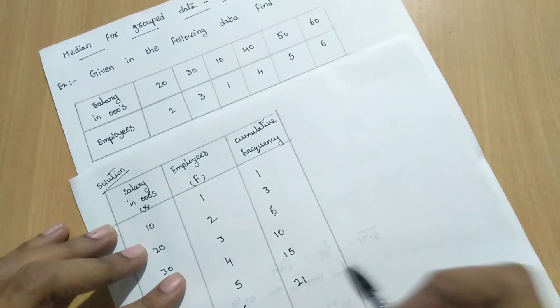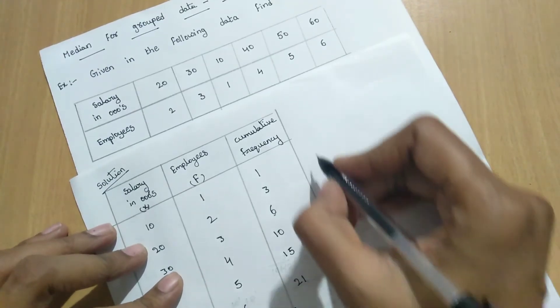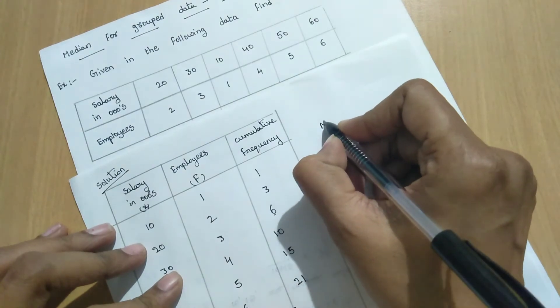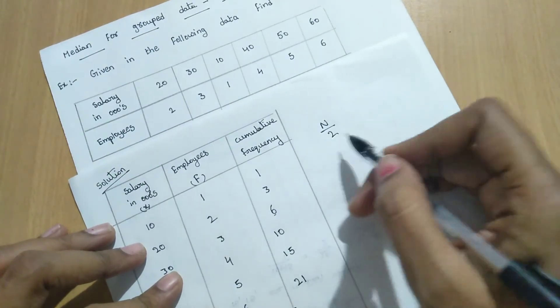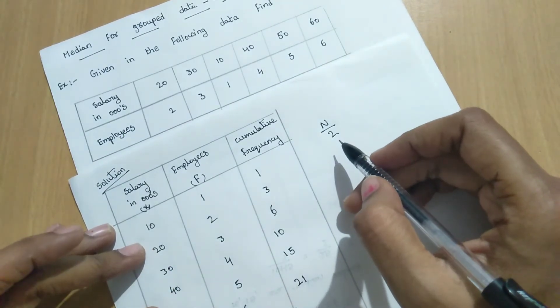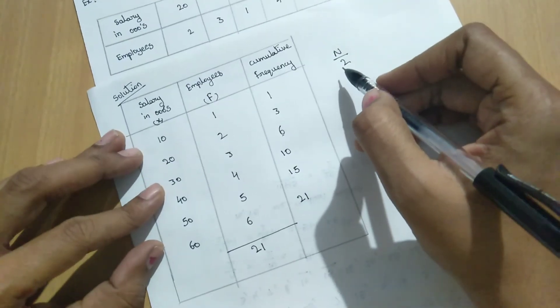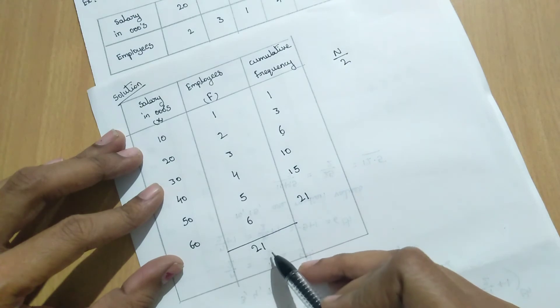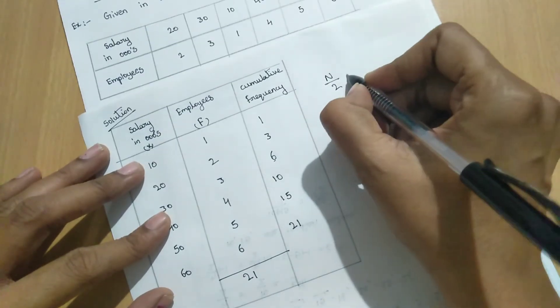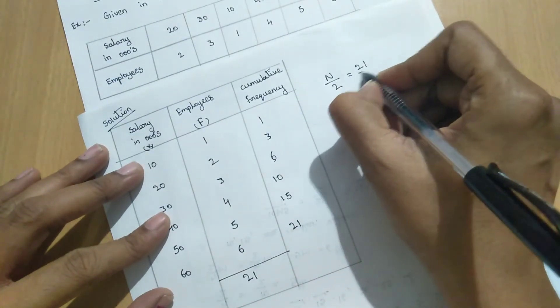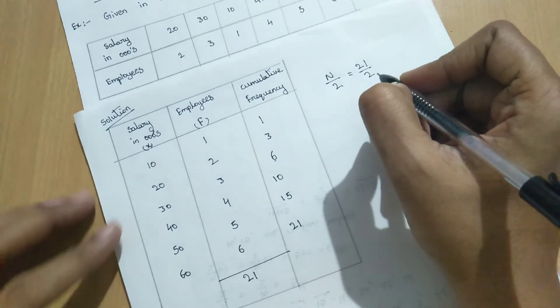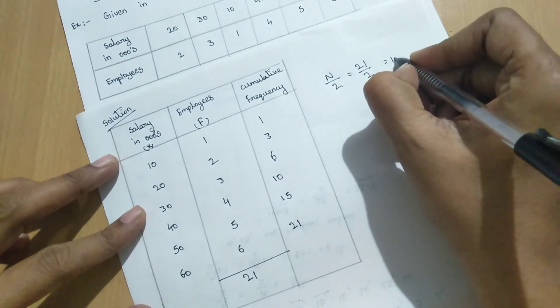Then what is the formula to calculate median for discrete data? So n by 2. This is the formula to calculate median for discrete data. So here n means the total frequency. What is the total frequency? 21. Then 21 by 2. So 21 by 2 equal to 10.5.